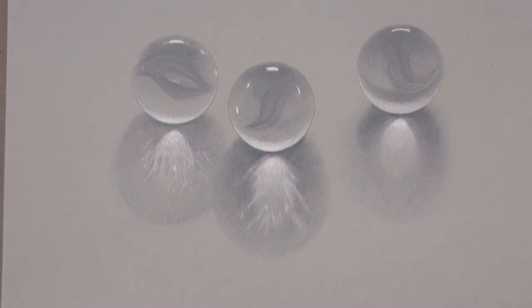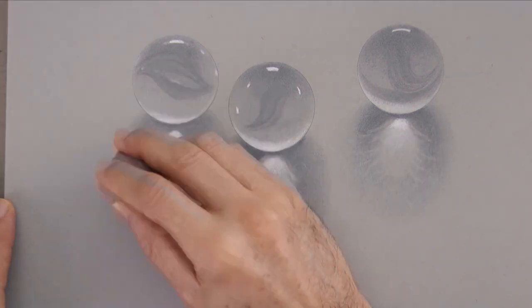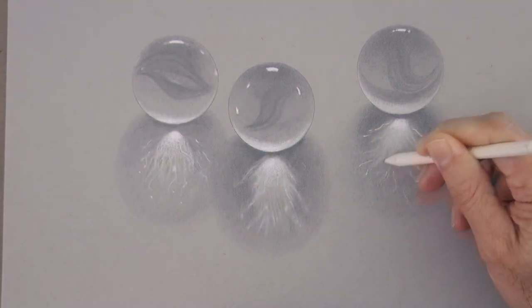As you saw, I mainly use a kneaded eraser when I need to lighten or erase an area with graphite. The list with all the materials that I am using is in the description below the video.